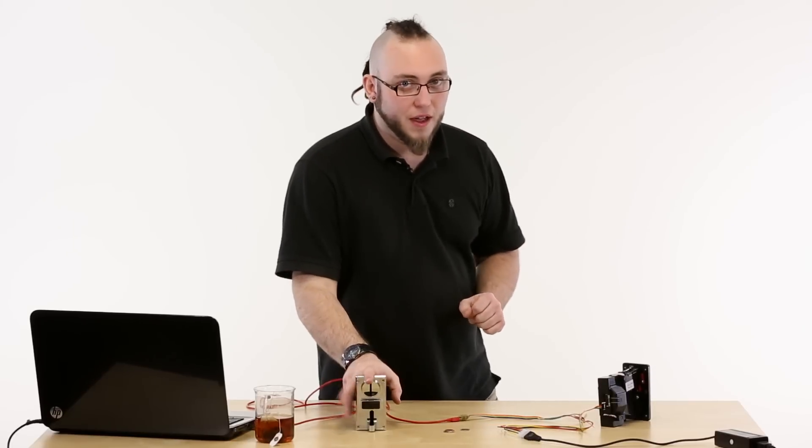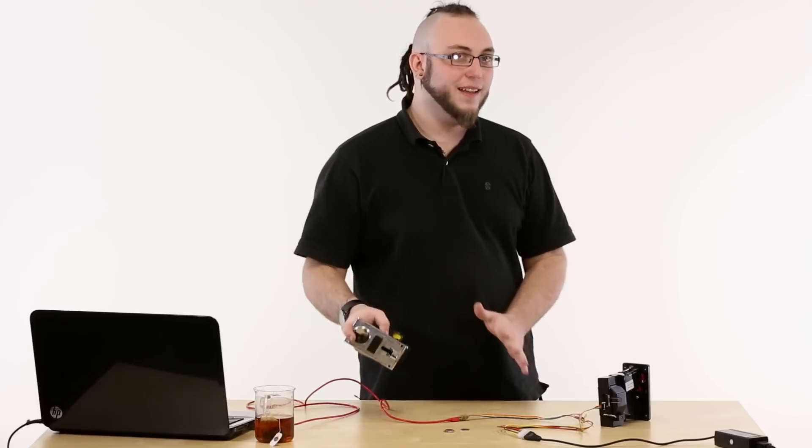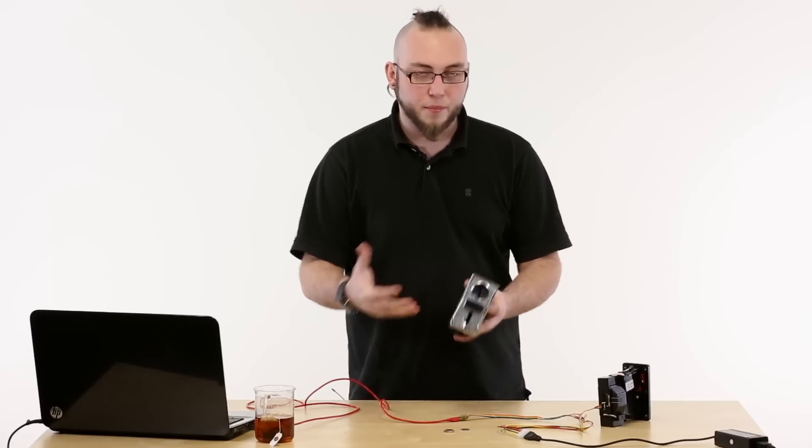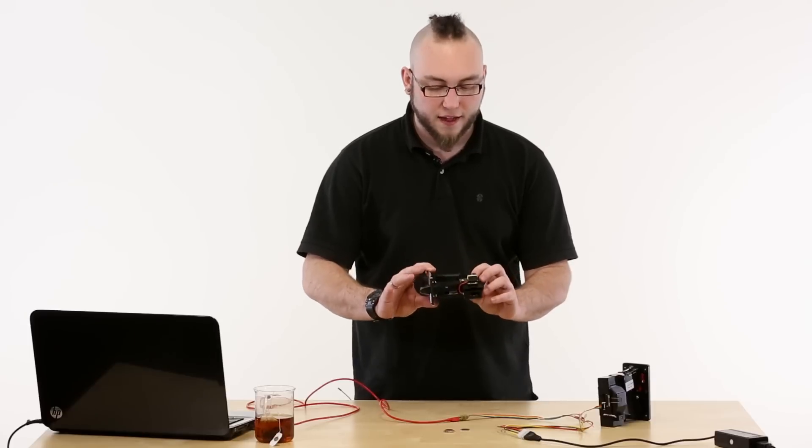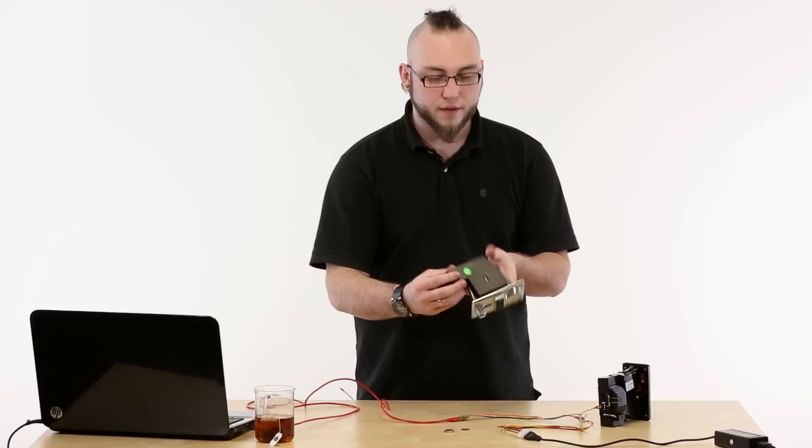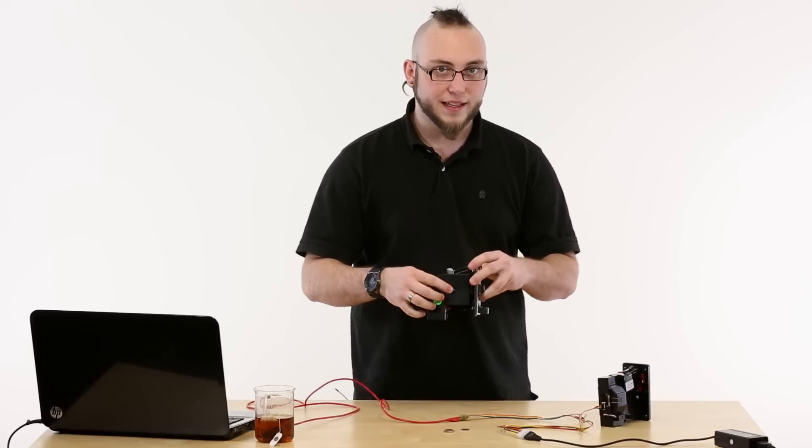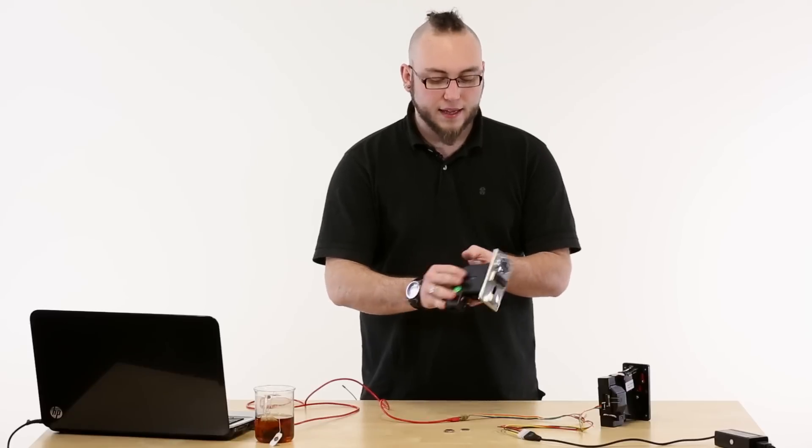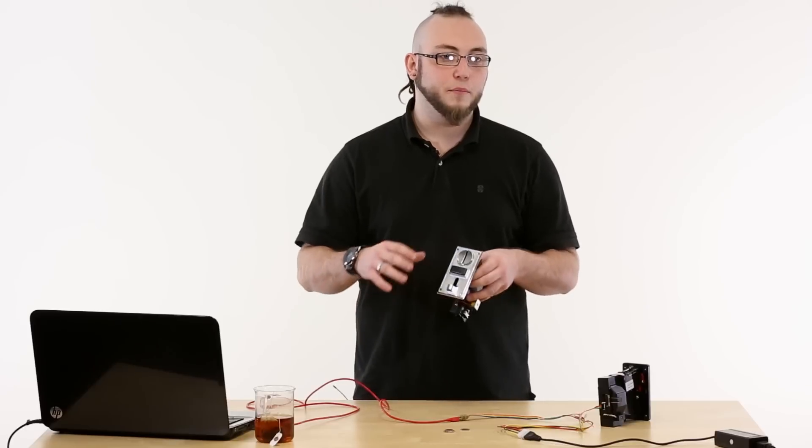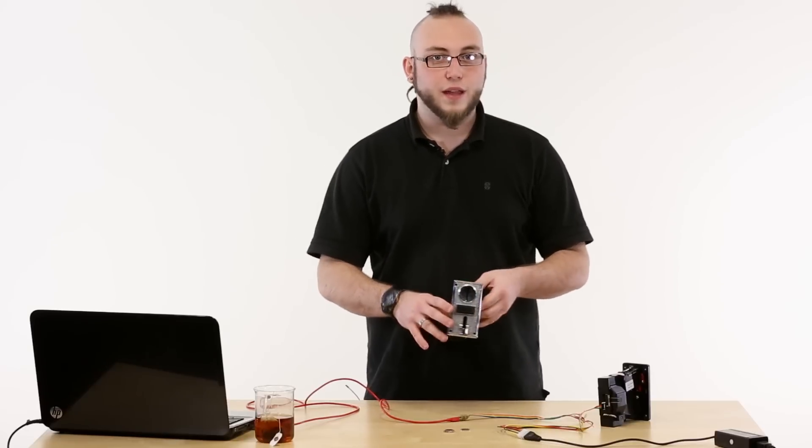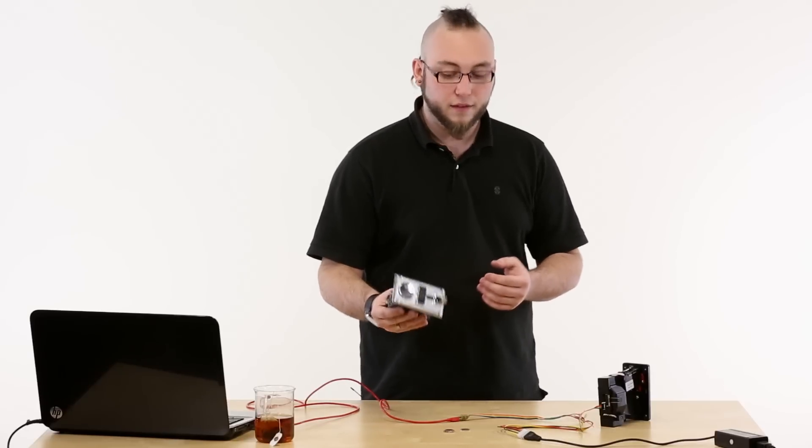We also have a two coin acceptor. The two coin acceptor works slightly differently but the basic operation is really the same. You can program it from the machine itself using a set button which is on the back and a couple of LEDs. And then it actually reports its coin values not in serial but in pulse widths. So you'll actually need a microcontroller to interpret what comes out of this.